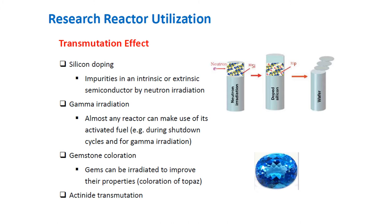For actinide transmutation, it has been recognized for many years that it is theoretically possible to transmute some long-lived actinides in spent nuclear fuel into shorter-lived products, thereby reducing the potential waste disposal hazard. Some actinide burners have been designed, but none has yet been built for this specific purpose. It is possible that some reactors may be utilized in the future for test irradiation of fuel plates or elements.